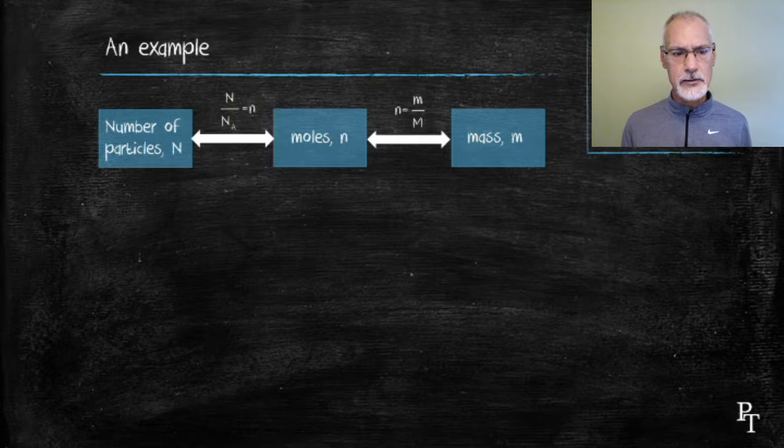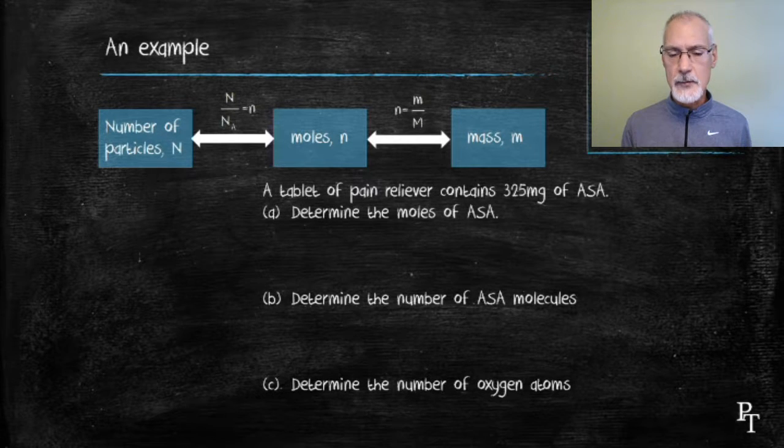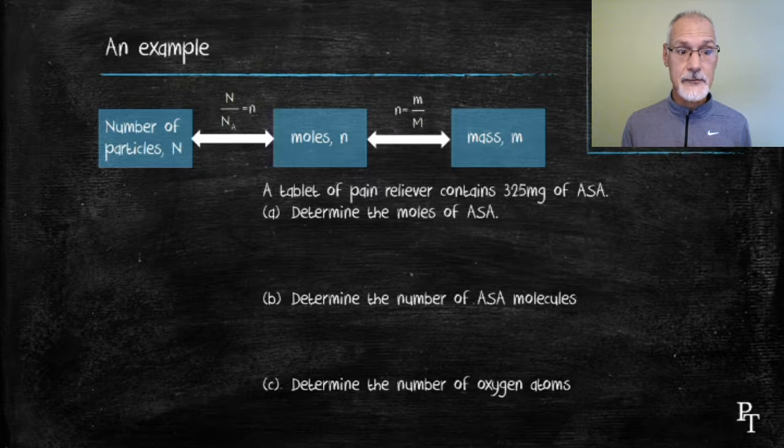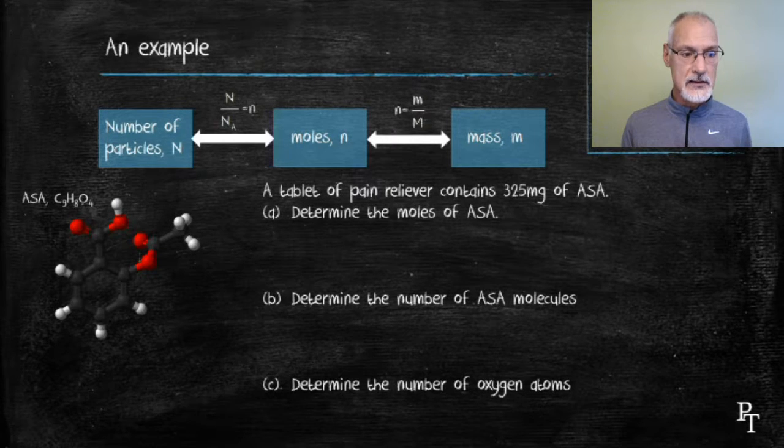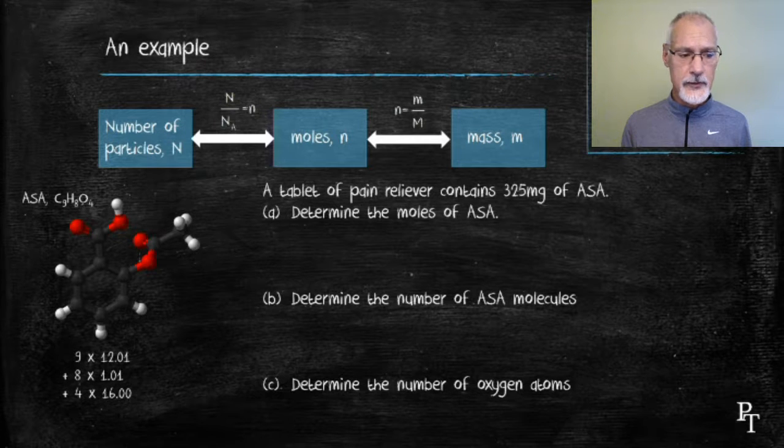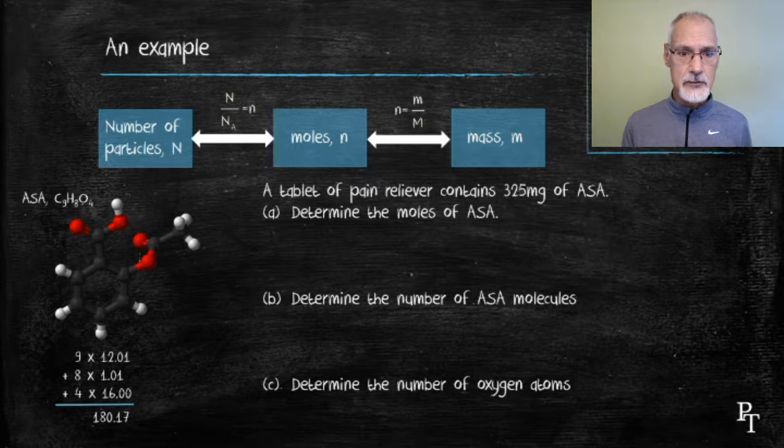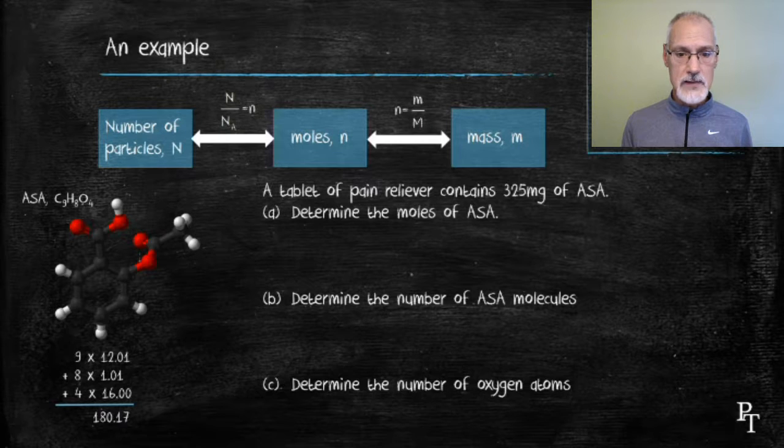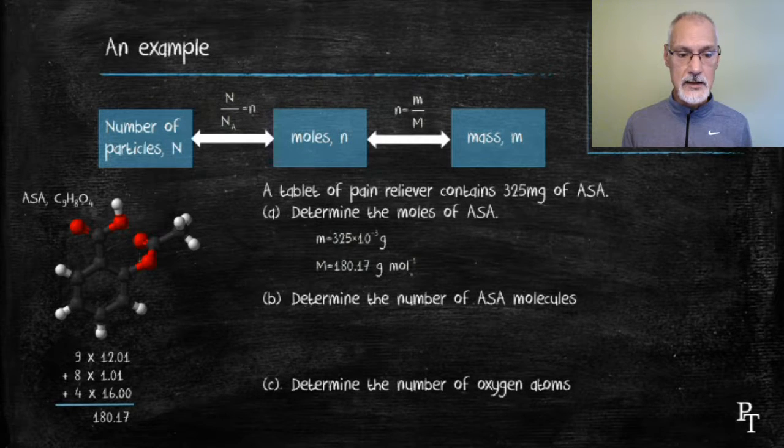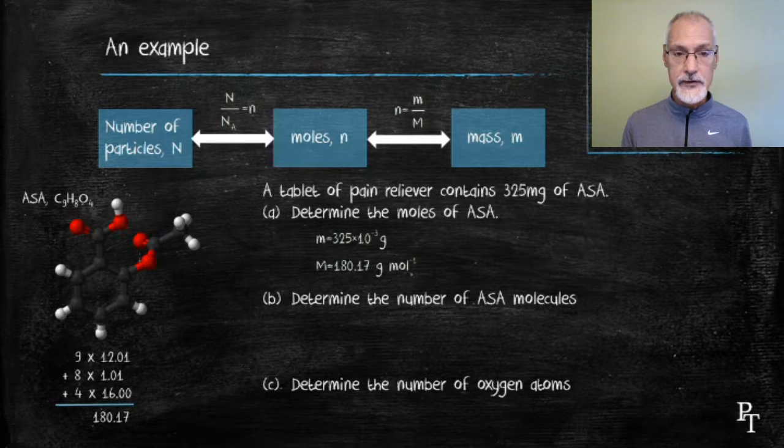Let's put this to work in an example. A pain reliever has stamped on its side that one tablet contains 325 milligrams of ASA, acetylsalicylic acid. It's a molecule that has this shape, and its formula is also listed below. First of all, I want to determine the moles of ASA. That will require knowledge of its molar mass. So I quickly count up the number of carbons, the hydrogens, and the oxygens present, consulting the periodic table, and add together their masses. So I have two bits of information at this point. I have the mass of ASA, 325 times 10 to the minus 3, because it's milligrams. And I have the molar mass, 180.17 grams per mole.